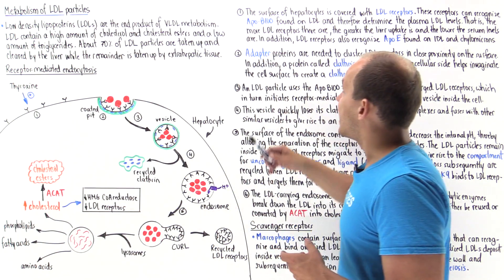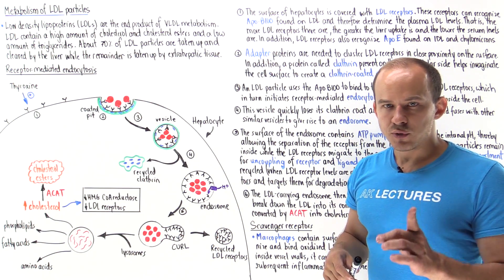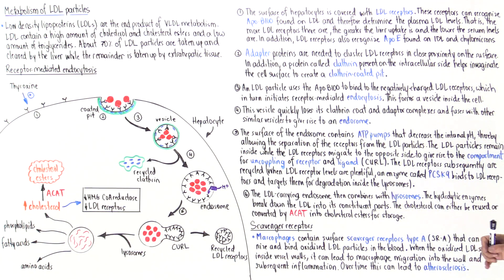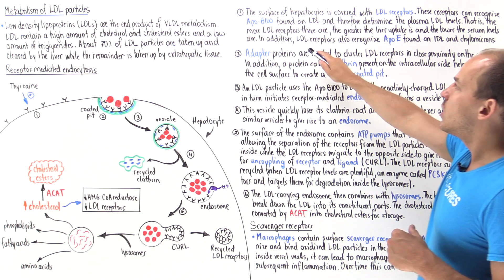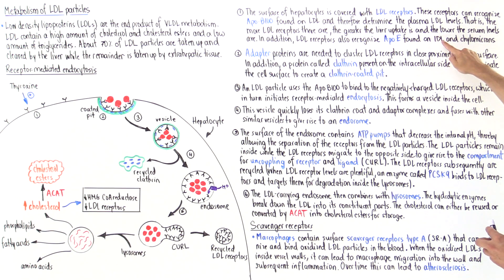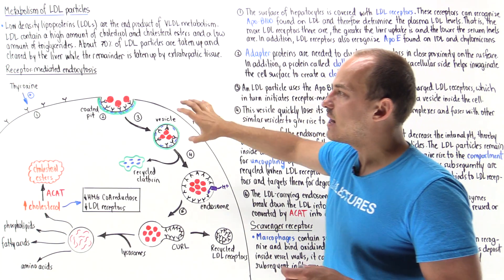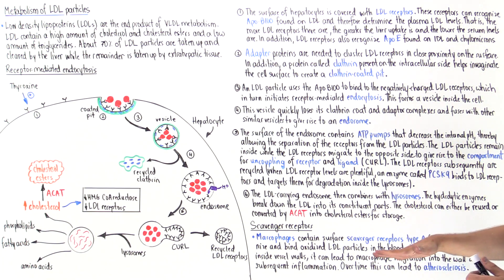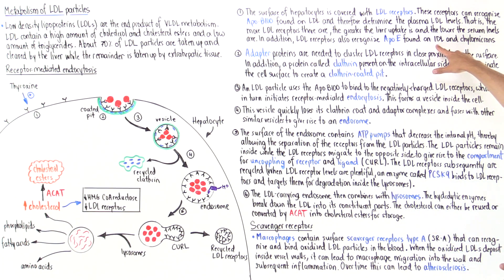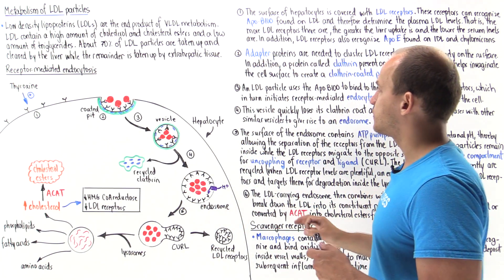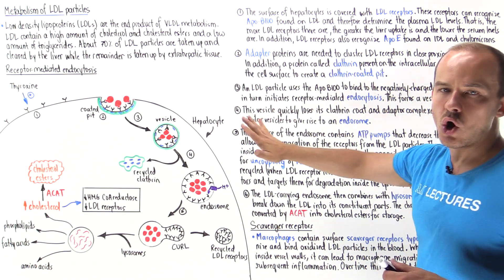LDL receptors can recognize ApoB100, but we also have other LDL receptors that can recognize additional apolipoproteins. For example, we have LDL receptors that can also recognize ApoE, which is found on IDL and chylomicrons. In the same exact way that LDL particles utilize receptor-mediated endocytosis in the liver, IDL and chylomicrons also utilize this very similar process. So if you know one, you know all the others.